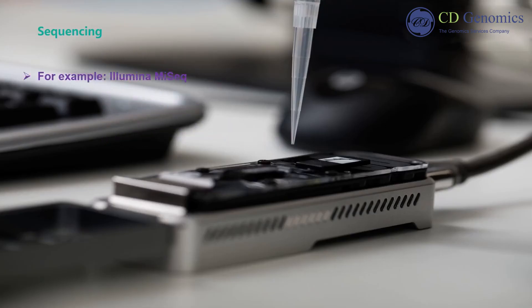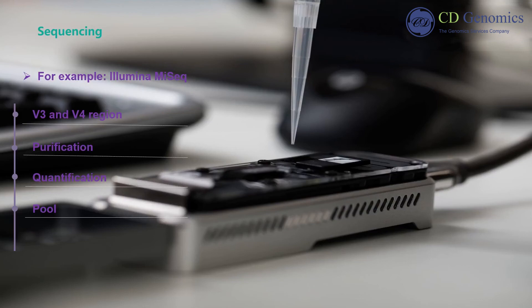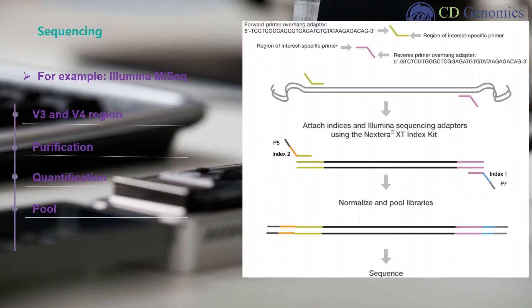When sequencing is performed with Illumina MiSeq, V3 and V4 region is commonly amplified by using a limited-cycle PCR. The PCR products are purified, quantified, and pooled. Subsequently, add Illumina sequencing adapters and dual-index barcodes to the amplicon target. By using the full complement of Nextera XT indices, up to 96 libraries can be pooled together for sequencing.